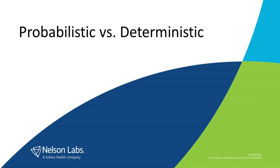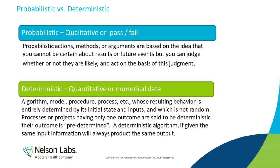USP 1207 divides CCI testing into probabilistic methods and deterministic methods. In simple terms, probabilistic methods are qualitative or pass-fail methods and are usually based on observations by humans. Deterministic methods are quantitative — there's a measured value generated by a machine. That's the basic difference between those two.